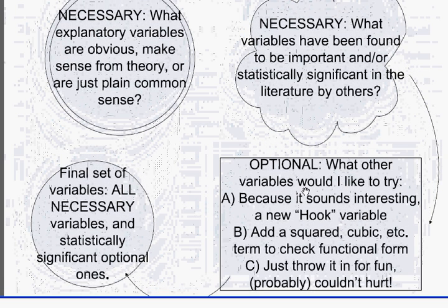In my view, add the necessary variables and don't drop them for any reason. For the optional variables, run the regression and drop them if they're not statistically significant — because they're optional by definition. But when you drop them, check to make sure the slopes of the other variables don't change a lot, because large changes might be an indicator of bias.